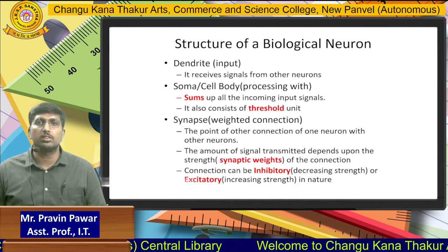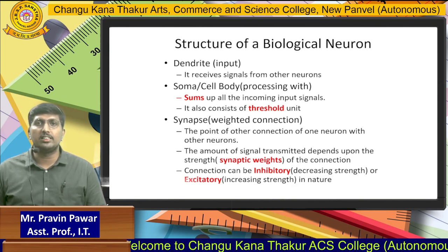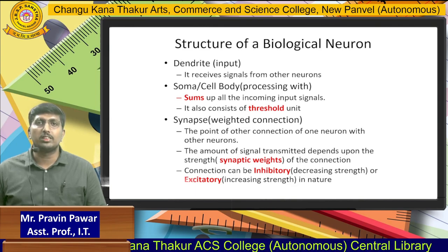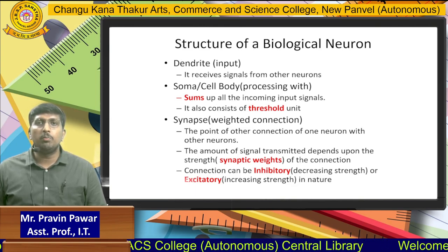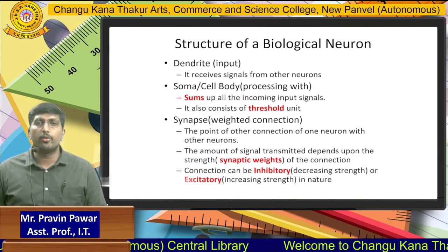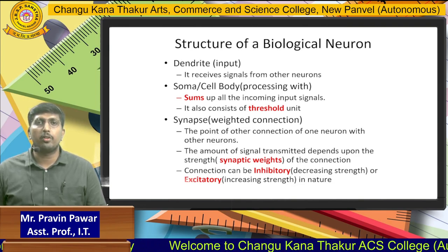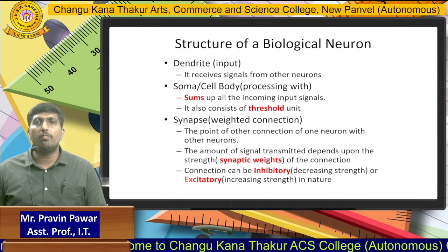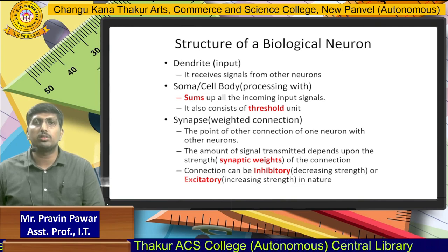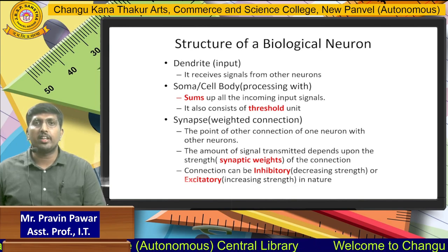The second part is the SOMA cell body, which in soft computing we can call the processing unit. It sums up all the input signals and also consists of a threshold unit. Whatever data is collected, we do the summation and generate output depending on the precise values. In soft computing, we can call this the CPU, where multiple inputs are processed and output is generated according to the CPU's capacity.